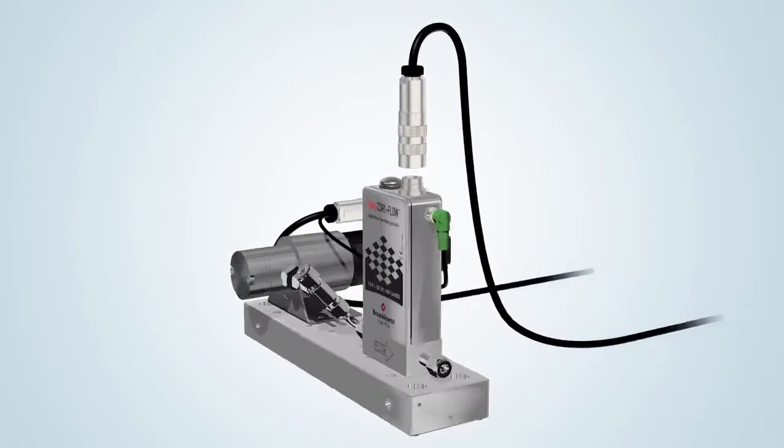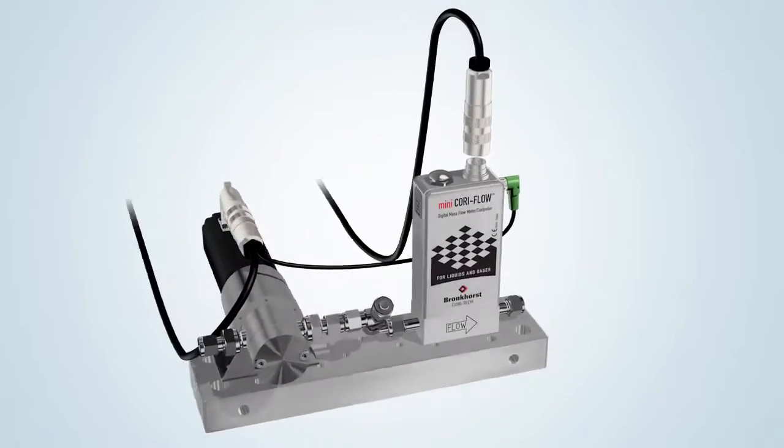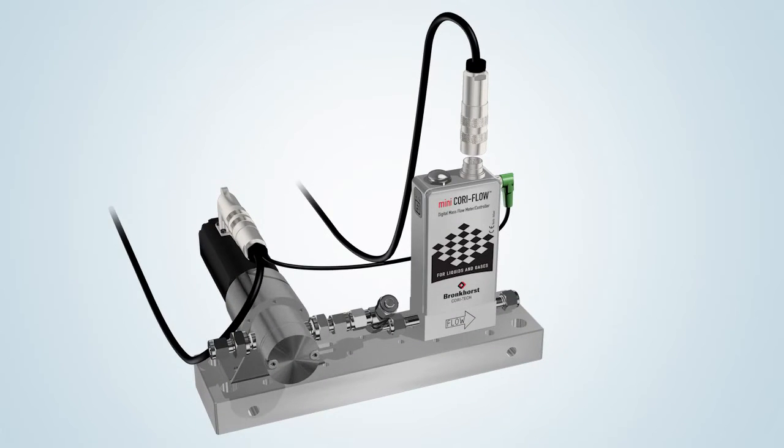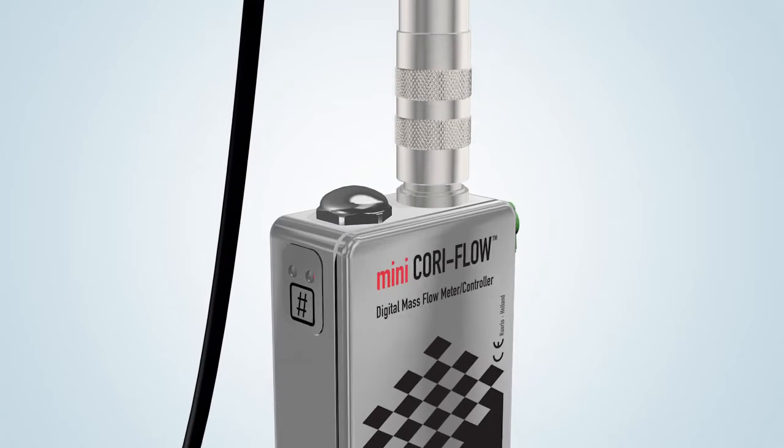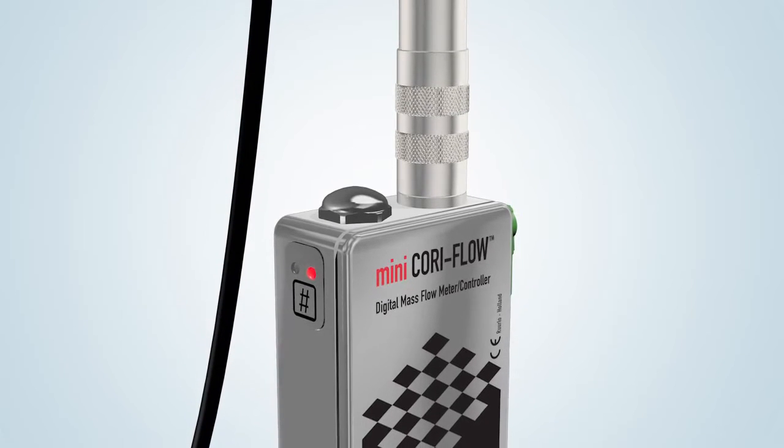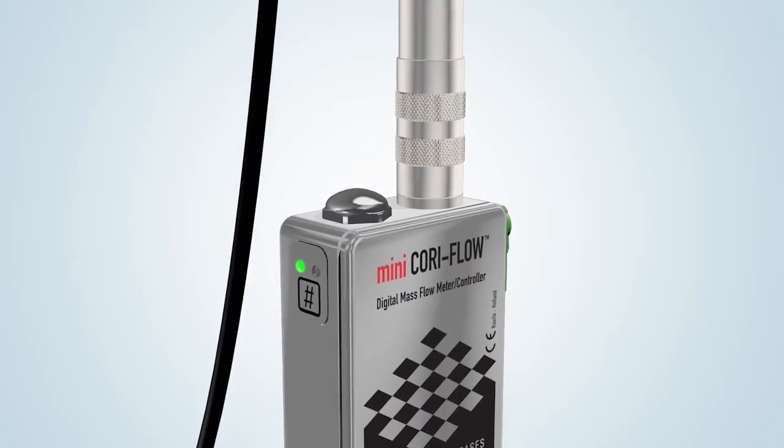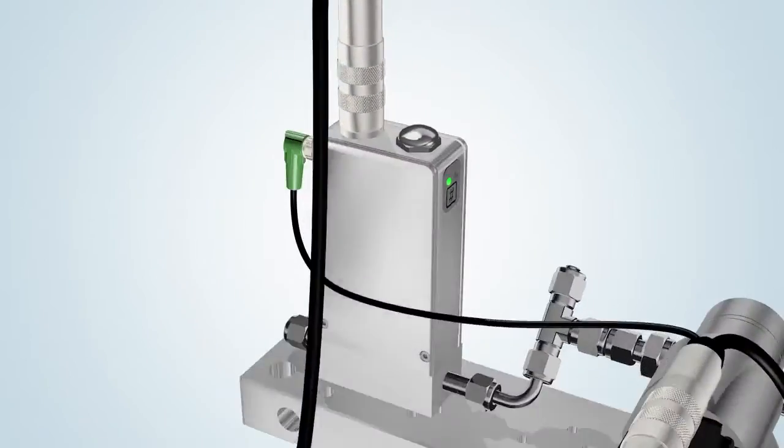A Bronkhorst Mini CoriFlow instrument requires a voltage of between 15 and 24 volts. When the supply voltage is connected, the LEDs show the current status. The instrument is ready for use when the green LED lights up.